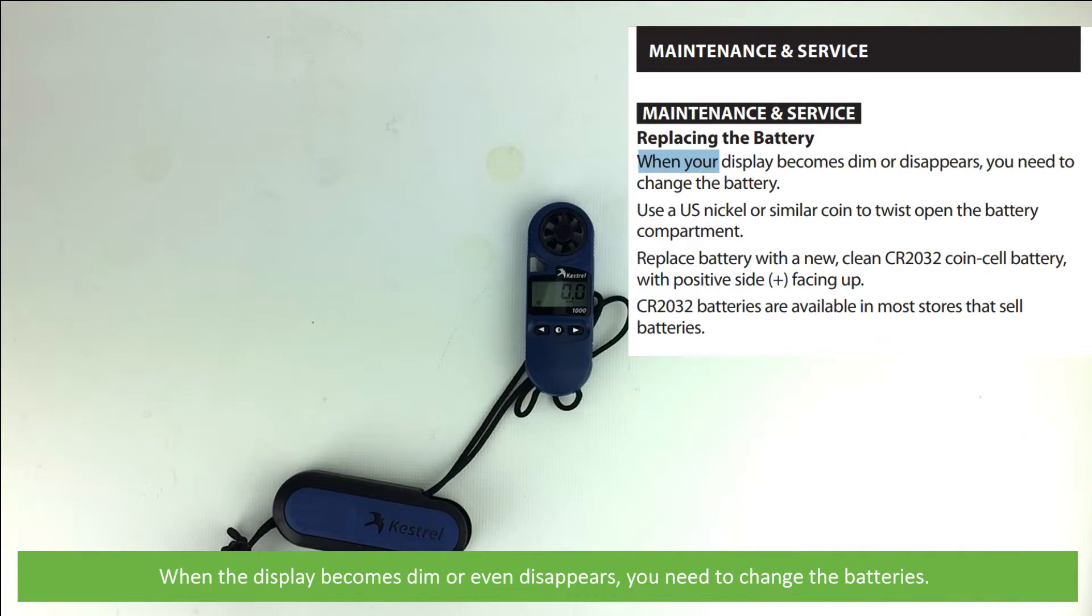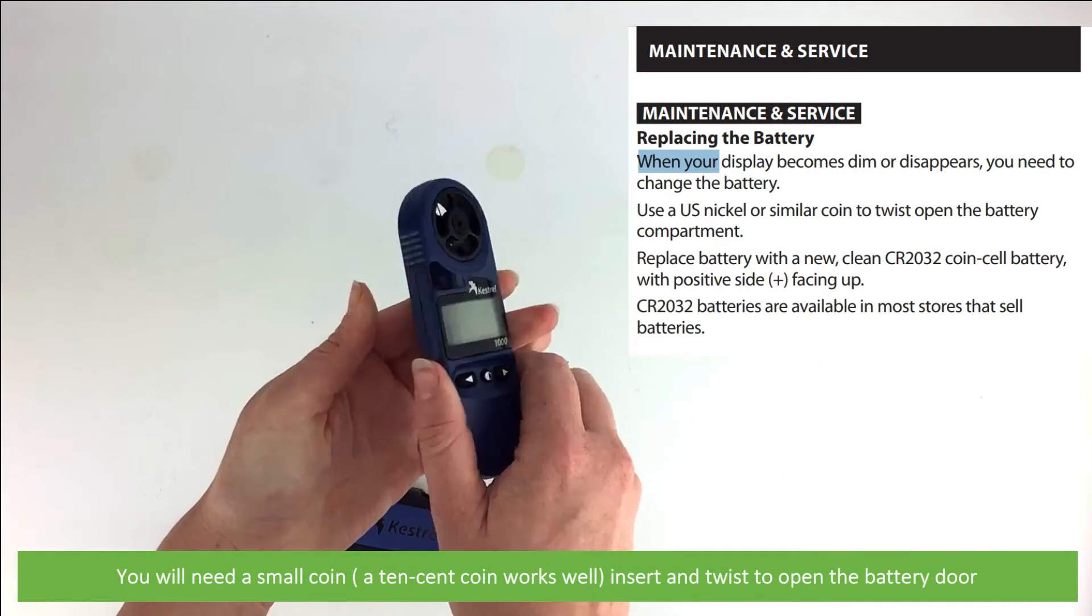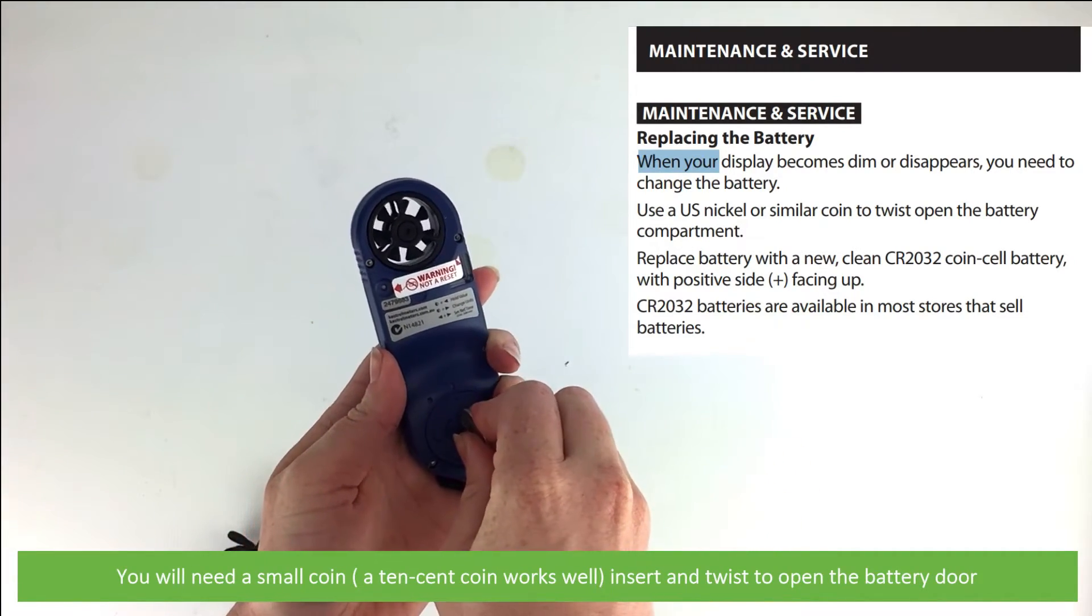When the display becomes dim or disappears, you need to change the batteries. You will need a small coin. A ten-cent coin works well. Insert it and twist to open the battery door.